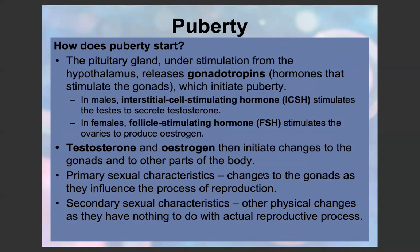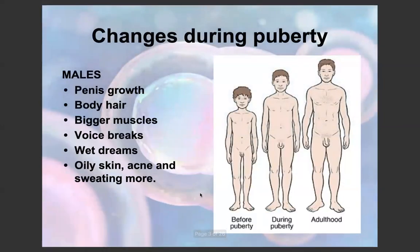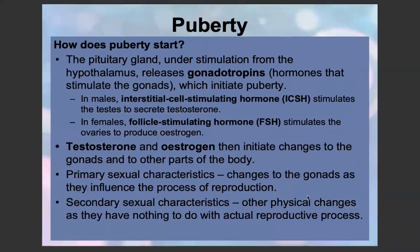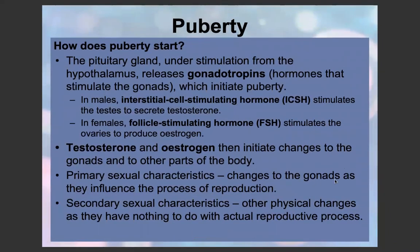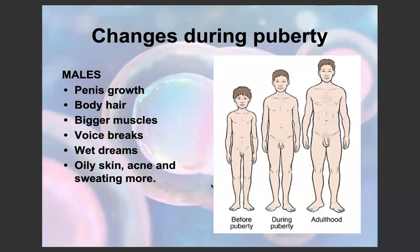The primary sexual characteristics are changes to the gonads as they influence the process of reproduction. Secondary sexual characteristics are other physical changes that don't play any role in the actual reproductive process. For males, some changes during puberty are penis growth, body hair, bigger muscles, voice breaking, wet dreams, and oily skin, acne, and sweating. These are all secondary sexual characteristics as they aren't physical changes to the gonads themselves — the gonads being the testes.